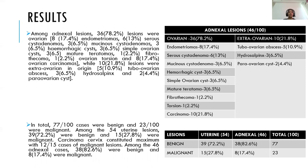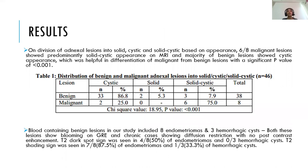Among 54 uterine lesions, 39 cases (72.2%) were benign while 15 cases (27.8%) were malignant. Carcinoma cervix constituted the maximum with 12 out of 15 malignant lesions. Among the 46 adnexal lesions, 38 (82.6%) were benign while 8 (17.4%) were malignant. On division of adnexal lesions into solid, cystic, and solid-cystic based on appearance, 6 out of 8 malignant lesions showed predominantly solid-cystic appearance on MRI, and the majority of benign lesions showed cystic appearance, which was helpful in differentiation with a significant p-value of less than 0.001.